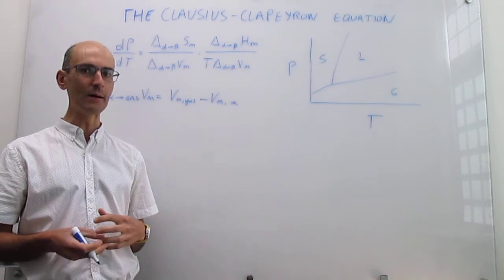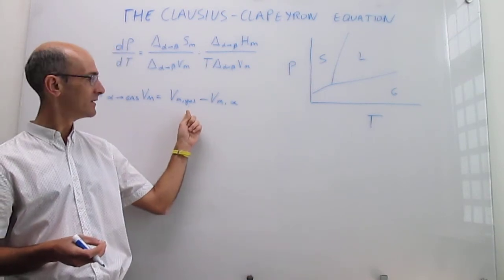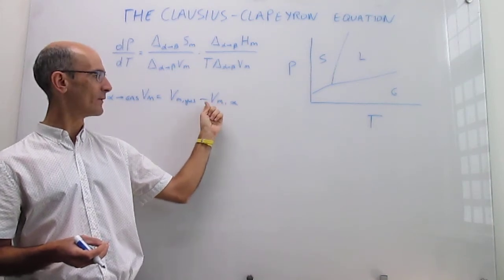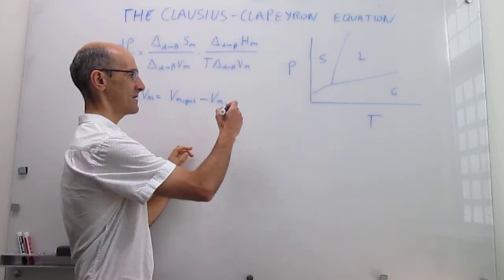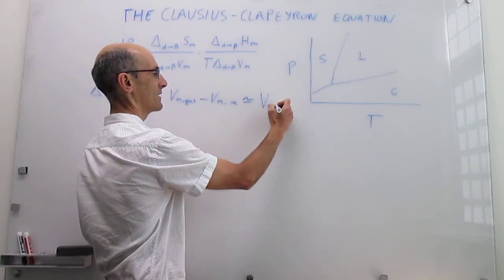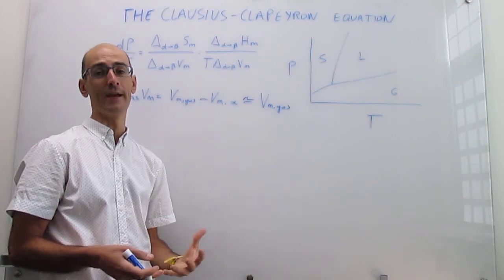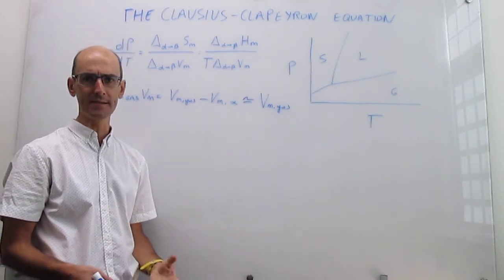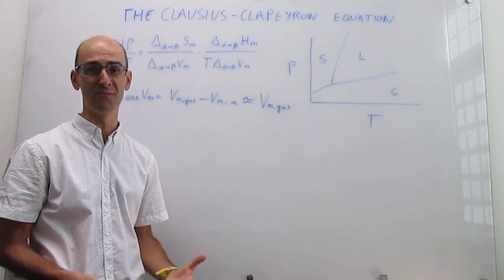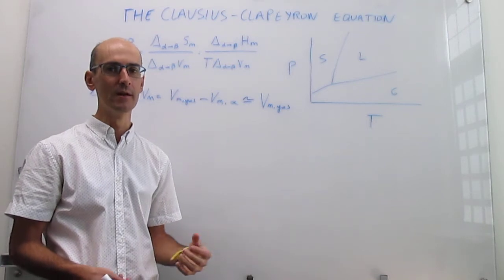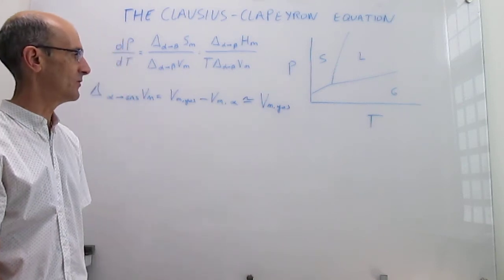Going from 24 liters to 18 milliliters means the liquid molar volume is more than a thousand times smaller than that of the gas. You can therefore completely neglect it without making a large error — the denominator is essentially just the molar volume of the gas. This holds for any substance: benzene near its boiling point has a gas-to-liquid molar volume ratio of about 300. This approximation works universally at normal conditions.